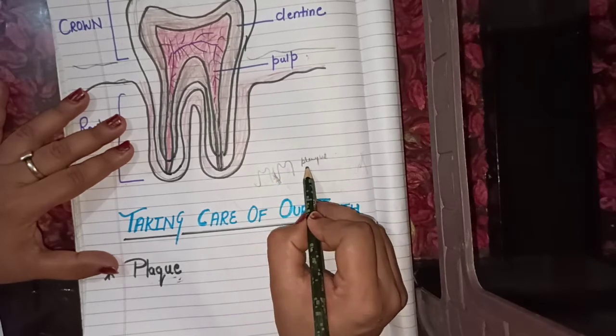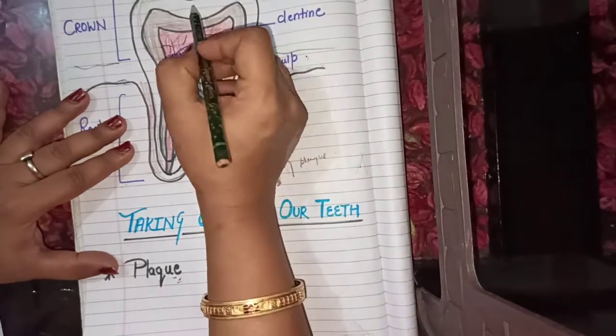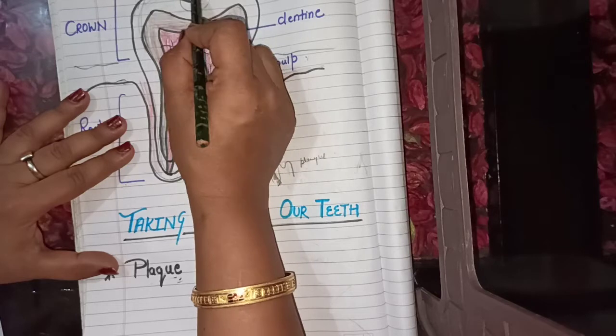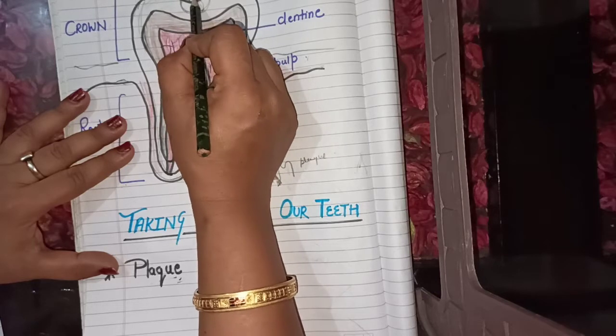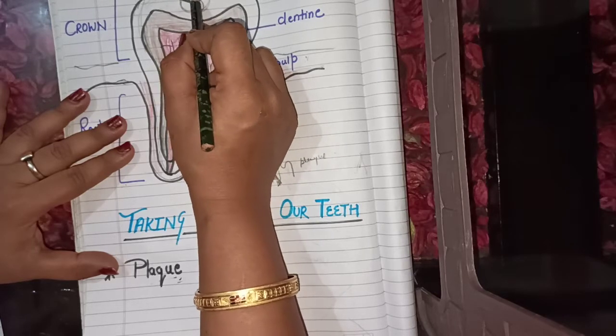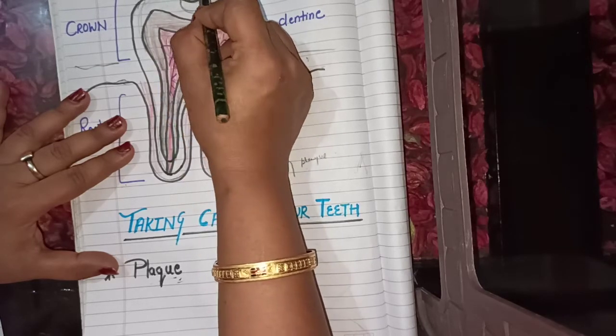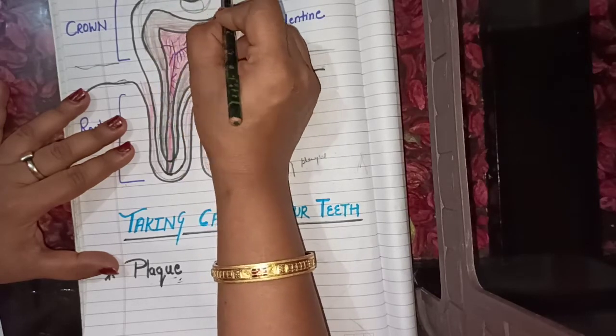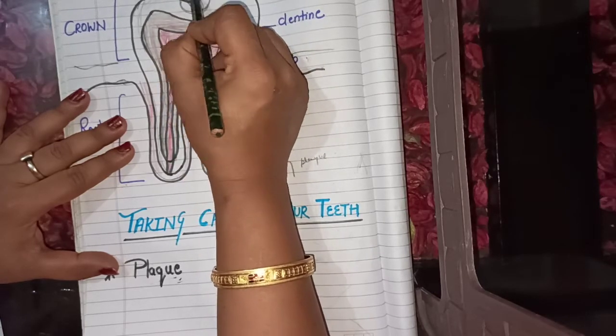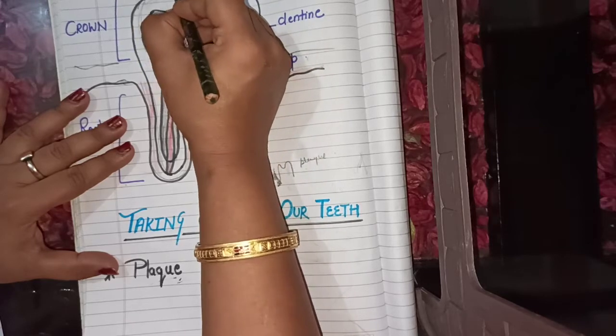This plaque eats away tooth enamel, causing a hole. This hole is called a cavity.